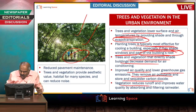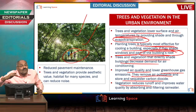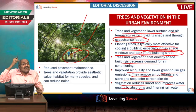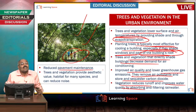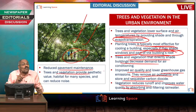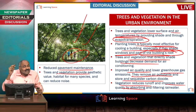Next, vegetation reduces runoff. Because of vegetation, ground runoff during rains will be reduced, and it improves water quality by absorbing and filtering rainwater. Then, there is reduced pavement maintenance — if sufficient trees are around pavements, their maintenance will be reduced. Trees and vegetation also provide aesthetic value; they look good and make human beings feel happy.